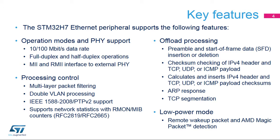Auto-negotiation between the peripheral and the external PHY enables automatic configuration of the operation mode. The external PHY is supported through two interface types: the typical media-independent interface, or MII, and the reduced MII interface that needs half the pins of the MII. Among the advanced features supported by the peripheral, we can list multi-layer packet filtering, management of double VLAN tags, and precision timing protocol support with high-precision time-stamping of frames, and several network statistics registers available to monitor the connection quality.